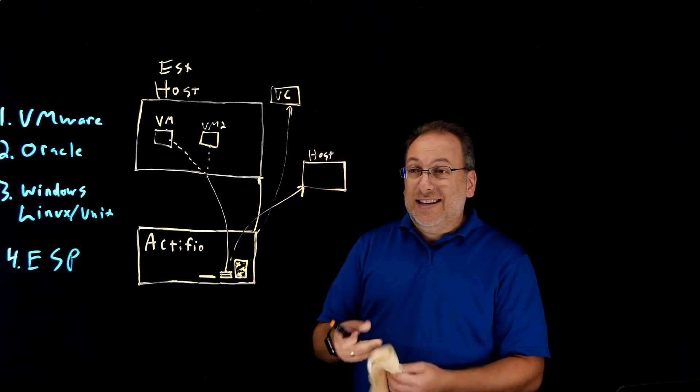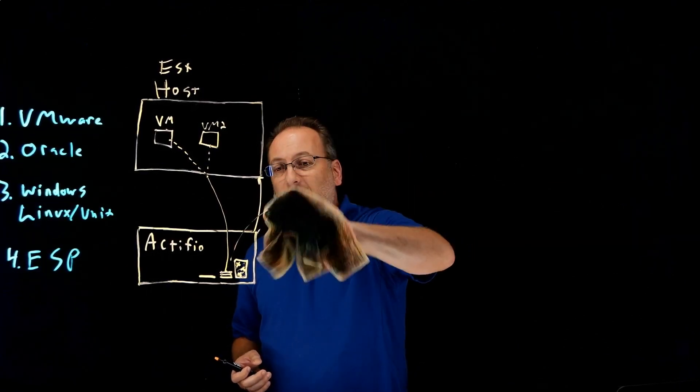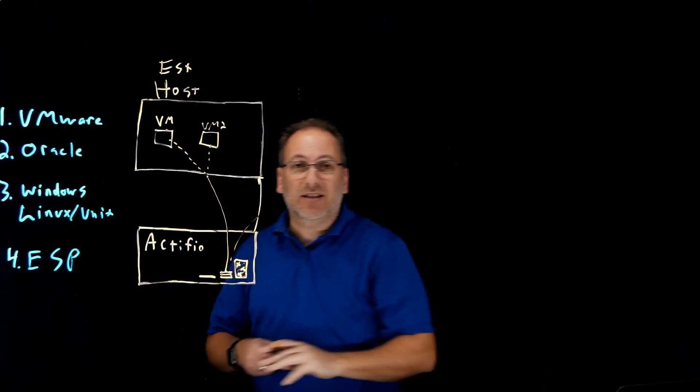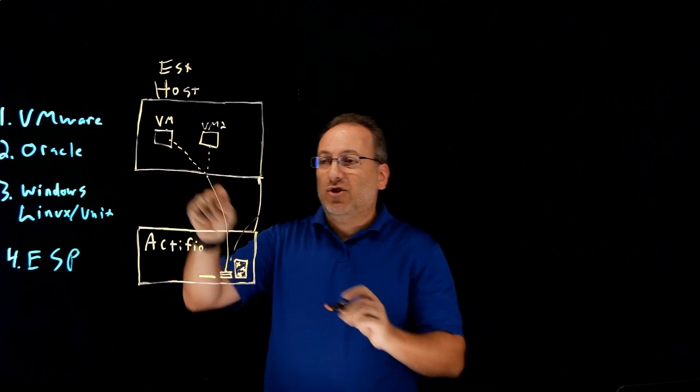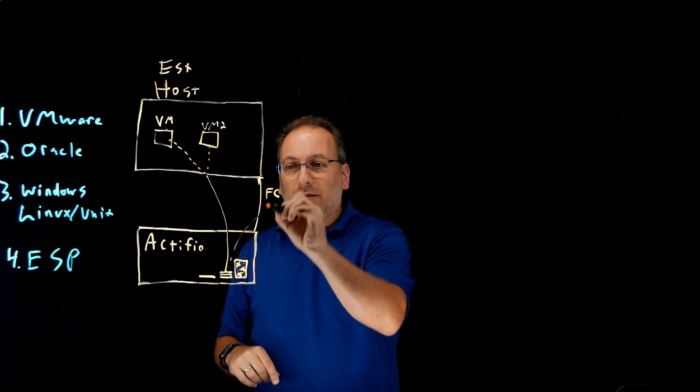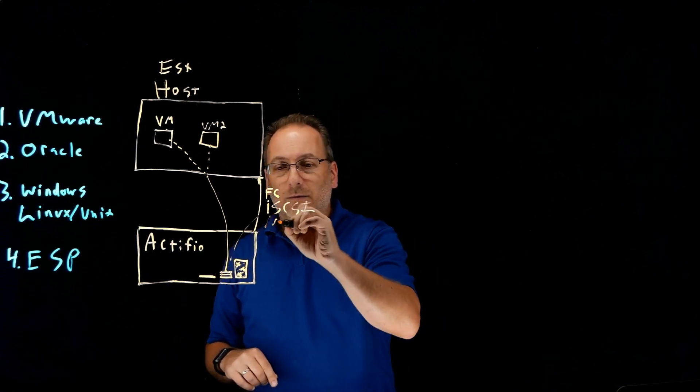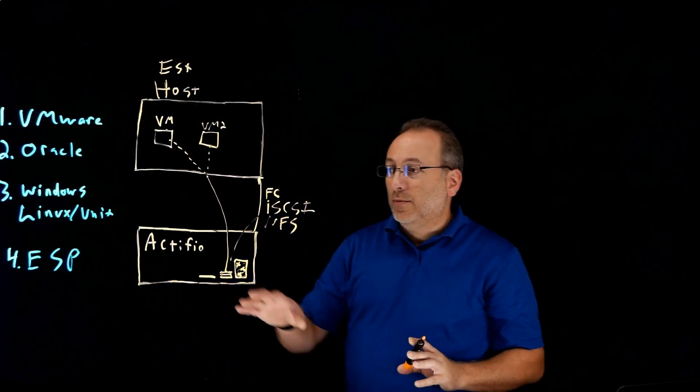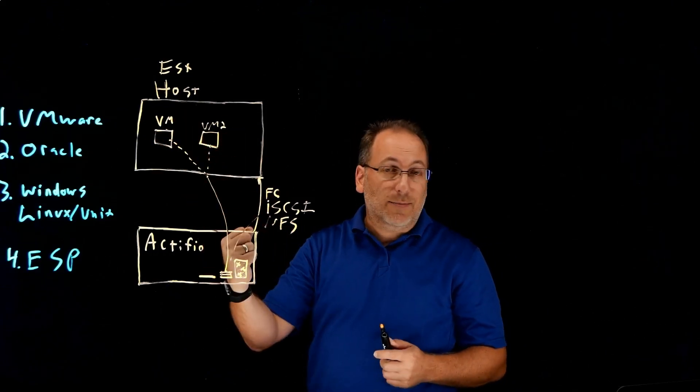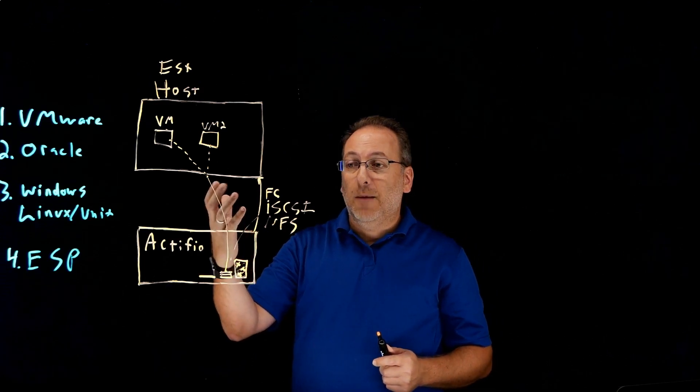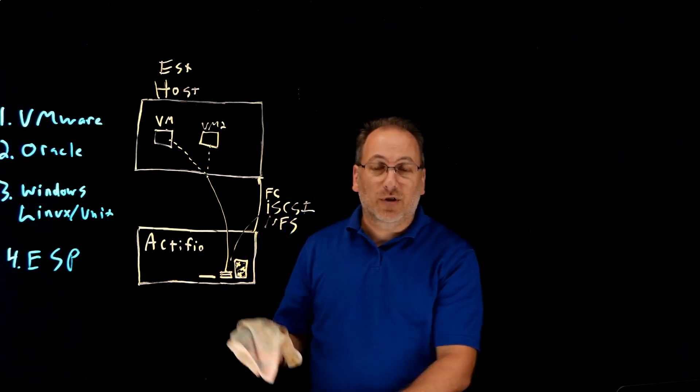Naturally, you can recover the data instantly by doing one of these mounts. You also have the ability to recover the data back to an existing data store using something like VMware vMotion. The presentation here can be Fiber Channel, iSCSI, or NFS. Regardless of the fact that the data was captured through API layers, sometimes it can be captured even through Fiber Channel layers. It can be presented back through any one of these different means based on what your infrastructure is and what you prefer.